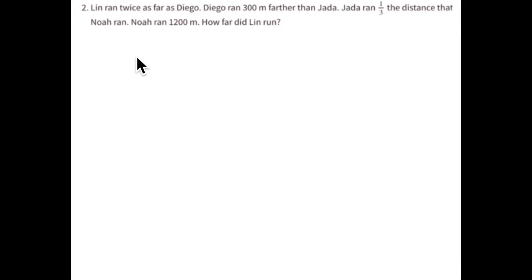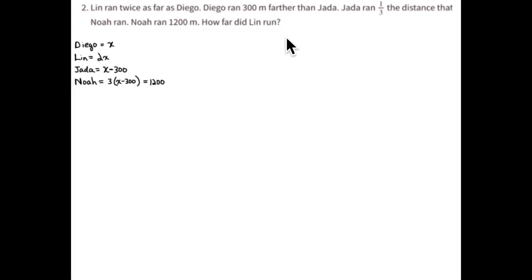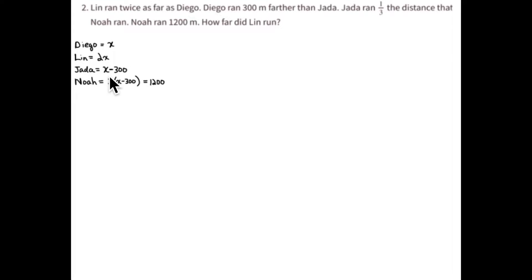The natural choice for x is Lin's run, because that's what you are asked to find — how far did Lin run? But when I did the problem, I didn't choose x as Lin's run; I chose x for Diego. I looked at the problem: Lin ran twice as far as Diego, so I'm going to make Diego x. That makes Lin 2x. And Jada ran 300 meters less than Diego, so Jada is x minus 300, and Noah ran three times farther than Jada.